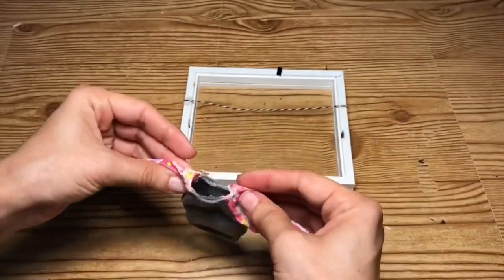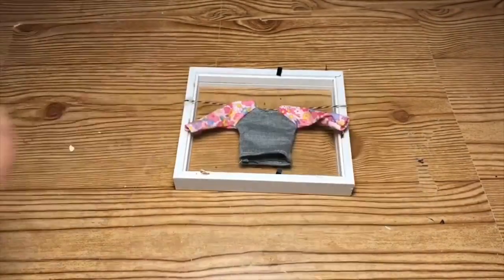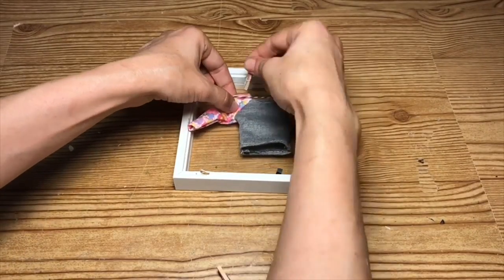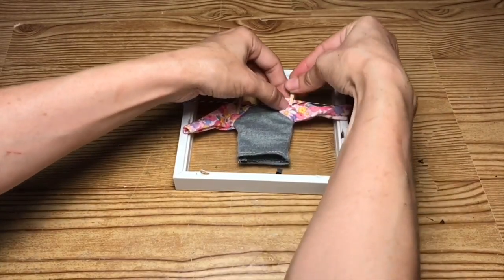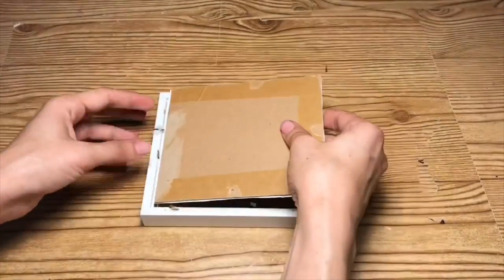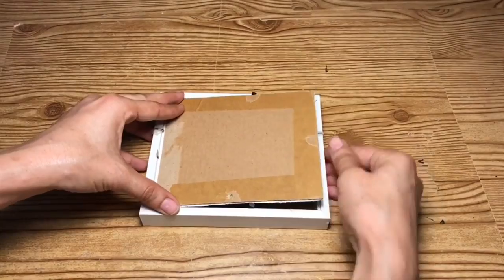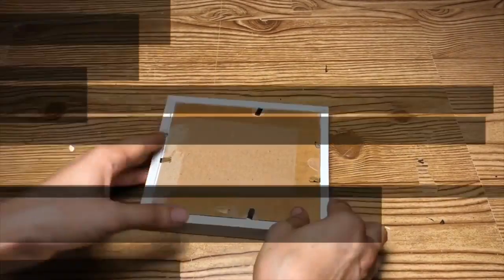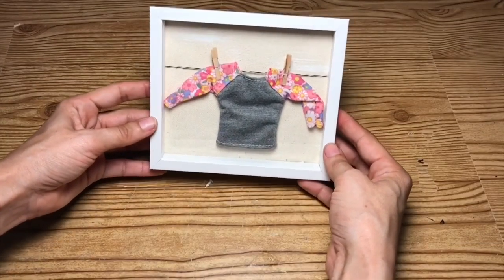Next, taking this Barbie shirt and some mini clothespins, I'm going to clothespin that onto the little laundry line that we made. Once you have that done, you'll just replace the backing back on the frame. This is what it should look like.